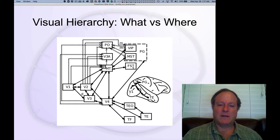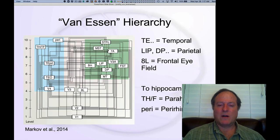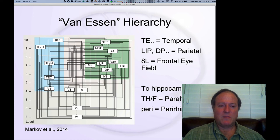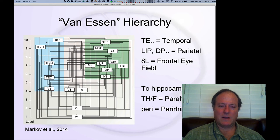In fact, recent evidence suggests there may be three parallel pathways through the dorsal stream: one for eye movement-related processing, another for reaching, and another for whole-body navigation. This diagram from Markov et al., including David Van Essen as one of the authors, follows up on the famous Felleman and Van Essen diagram based on patterns of feedforward and feedback connectivity — showing the ventral (what) pathway on the left in blue, and the dorsal pathway on the right.